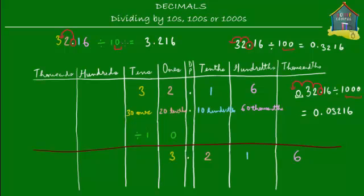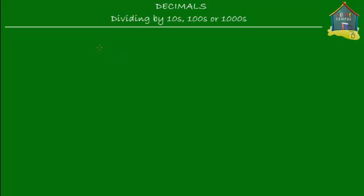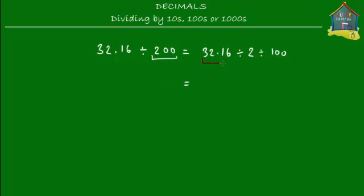Let's do one more thing. This was straightforward for dividing by ten, hundred, and thousand, but what if I give you a slightly different kind of number — not as straightforward, but not that complicated either. Say the same number, 32.16, and this time divide it by 200. The trick is to first split 200 up: divide 32.16 first by 2, and then divide the result by 100.